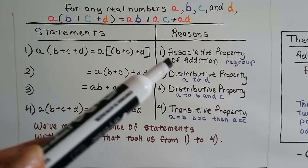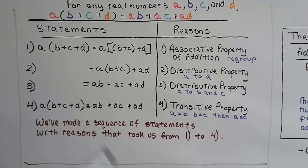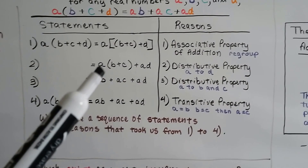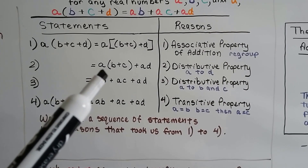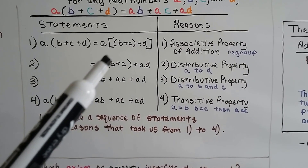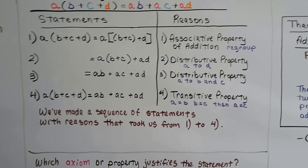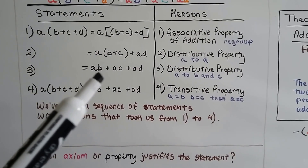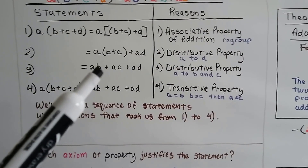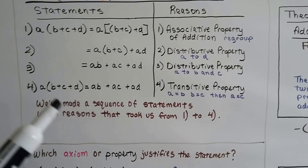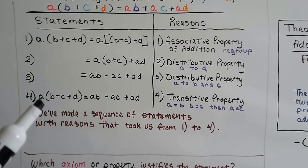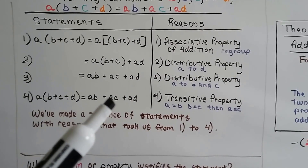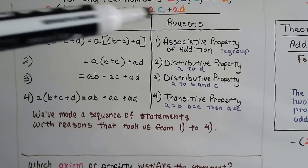Our reason for this step is the associative property of addition, which says we can regroup. This then equals the next expression where we take the brackets away because we distribute the a to the d — that's the distributive property. And this equals the next because we distribute the a to the b and the a to the c, ending up with a times b plus a times c plus a times d.